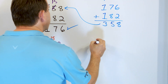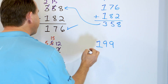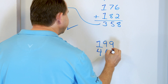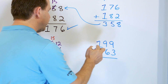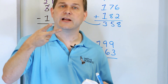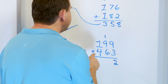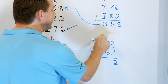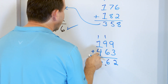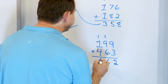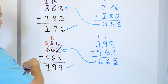Let's check it: 199, we just subtracted 463, so let's add it back in. 9 plus 3: start with 9 and go up 10, 11, 12. We get 12 — put a 2, carry the 1. Now 9 plus 1 is 10, plus 6 is 16 — carry the 1. 4 plus 1 is 5, plus 1 more is 6. So we have 662 — that exactly matches, so we know that our 199 is correct.